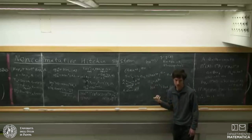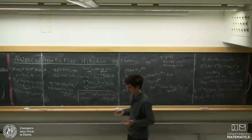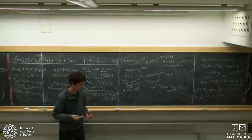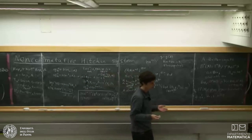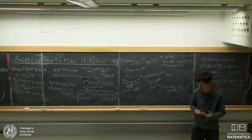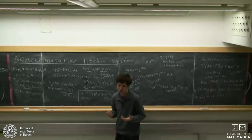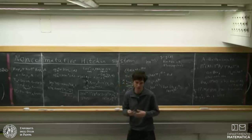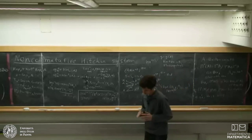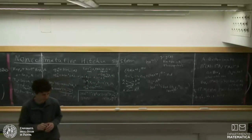So this is a non-commutative version, giving a de-categorified construction of the Hitchin system. Since we know it comes from categories, we can apply the corresponding categorical machinery. I'll stop here.